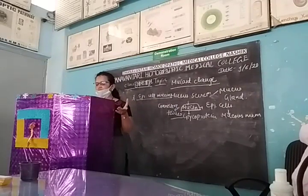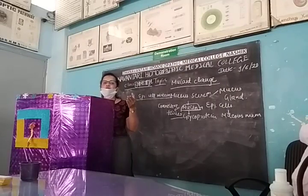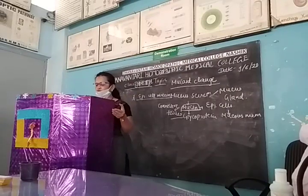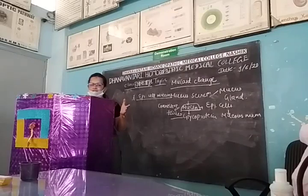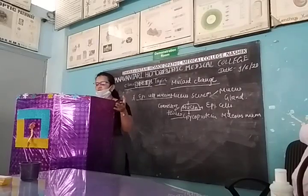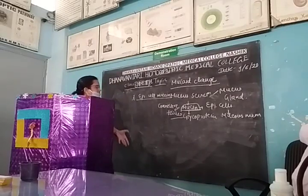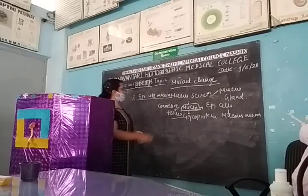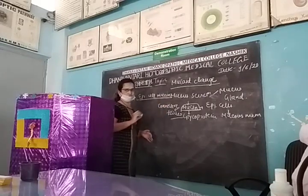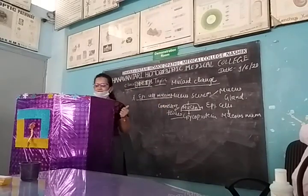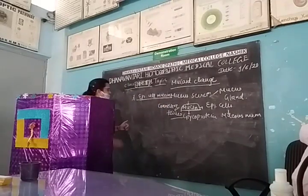For example, tumours of the ovary, tumours of the stomach, or tumours of the large bowel. These are some examples where there is secretion of epithelial cell mucin. The second type is connective tissue mucin.